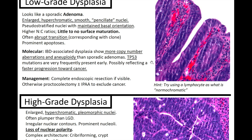Molecularly, IBD-associated dysplasia can show more copy number aberrations and aneuploidy than sporadic adenomas. TP53 mutations occur very frequently and may reflect faster progression toward cancer. Management-wise, this can be removed endoscopically or via proctocolectomy.